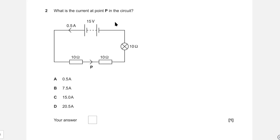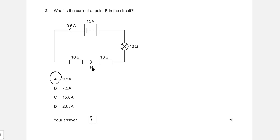What is the current at point P in the circuit? We're tempted to do some calculations because we have the resistance, the current, and the voltage. However, this is a series circuit, meaning that the current does not change throughout the circuit. Therefore, at P, the current will be the same, which is 0.5 amps. The correct answer is A.